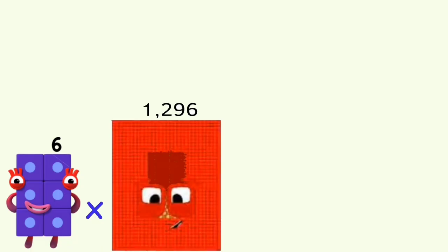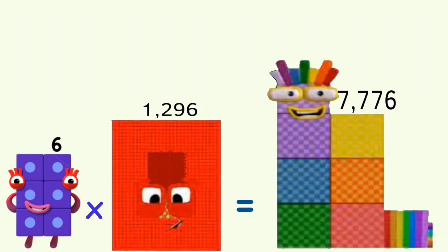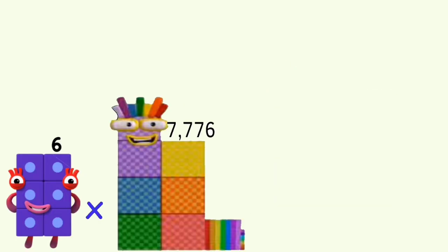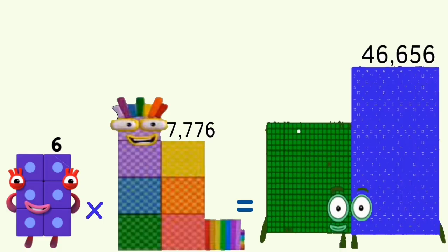6 times 1,296 equals 7,776. 6 times 7,776 equals 46,656.